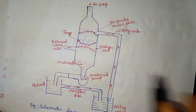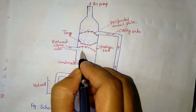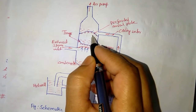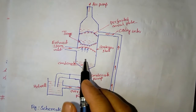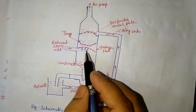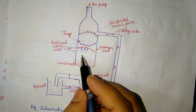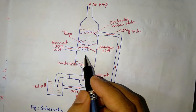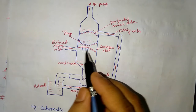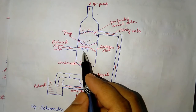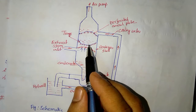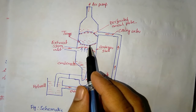Because steam flows upward and cooling water flows downward in opposite directions, this type is called a counter-flow condenser. In some types, steam and cooling water flow in the same direction, making it a parallel flow condenser.